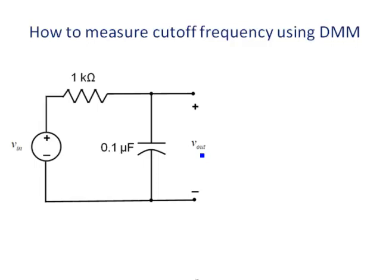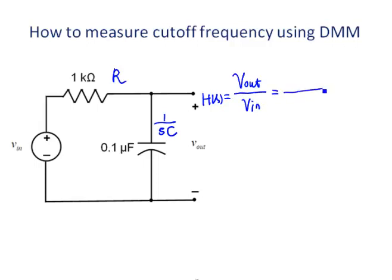The output voltage is across the capacitor. Let's look at the S-domain circuit. The impedance for the resistance is R, and the impedance for the capacitor is 1 over SC. The transfer function of the circuit is defined as the output voltage over the input voltage. H(s) is equivalent to V-output over V-input. The resistor and the capacitor are in series, so that is typically a voltage divider circuit. The voltage across the capacitor over the source voltage is the impedance of the capacitor over the total impedance in the circuit.